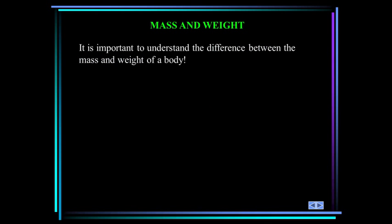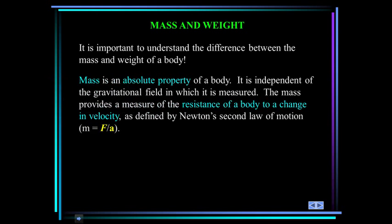Now it's very important to understand the difference between mass and weight. Mass is an absolute property of the body. It does not change in different gravitational fields. You have the same mass on the Earth as you do on the Moon, as you do on Jupiter. It can also be defined as the resistance of a body to a change in motion.